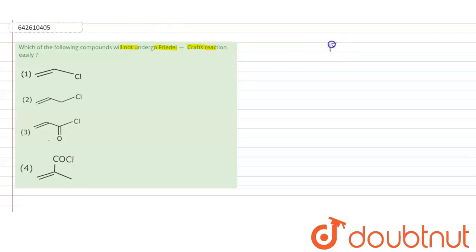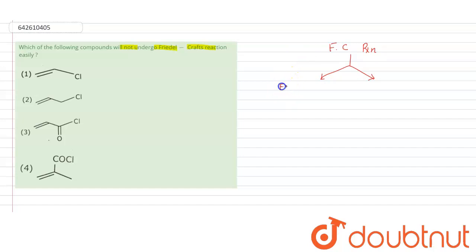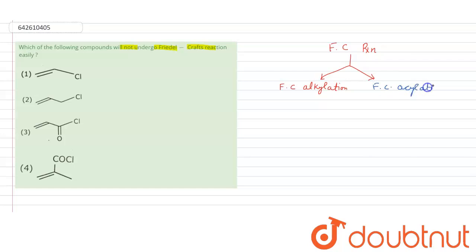We know that the Friedel-Crafts reaction has two types: one is Friedel-Crafts alkylation, and the other is Friedel-Crafts acylation.